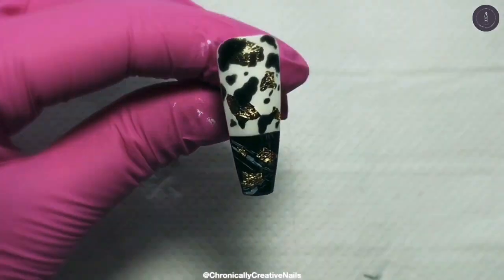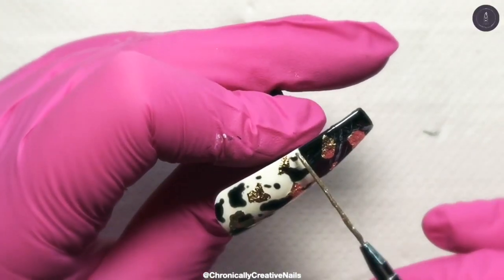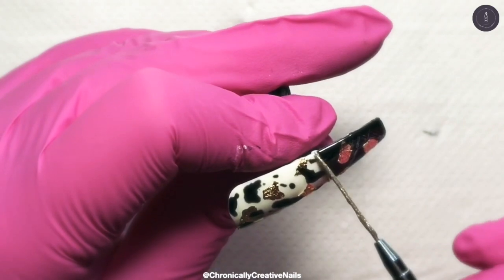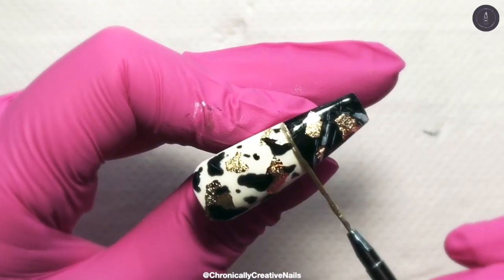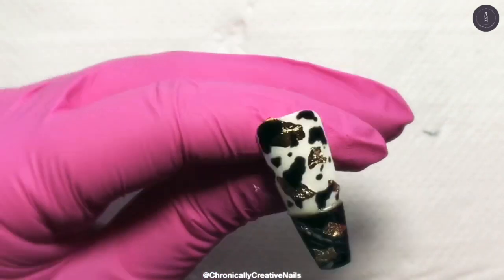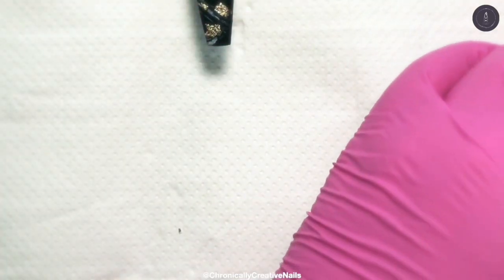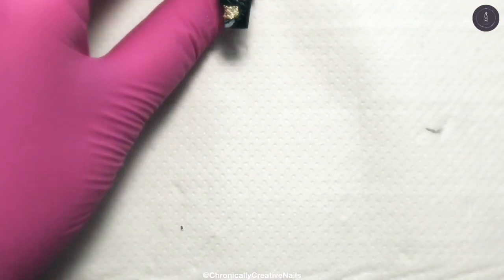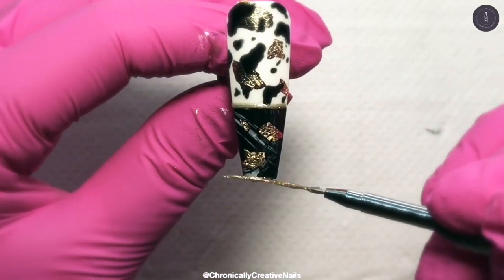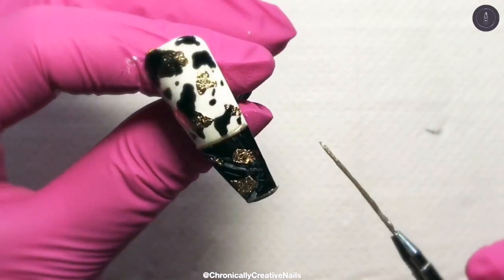There we go. So I've cured that in the lamp and now I'm going in with the embossing gel. Now technically I should have done this after a matte top coat but I forgot so I did it this way, but I would suggest doing it after your matte top coat.